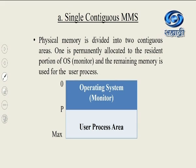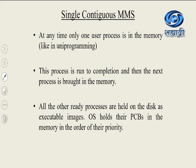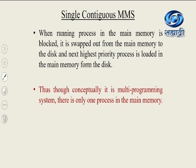We will start with contiguous real memory management for multiprogramming operating systems. In the single contiguous memory management system, physical memory is divided into two contiguous areas: one permanently allocated to the resident portion of the operating system, and the remaining memory used for the user process. At any time only one user process is in the memory — just like in uniprogramming. This process runs to completion and then the next process is brought into memory. In single contiguous type, all other ready processes are held on the disk as executable images. The OS holds their PCBs in memory in order of their priorities. When the running process is blocked, it is swapped out from main memory to the disk, and the next highest priority process is loaded.